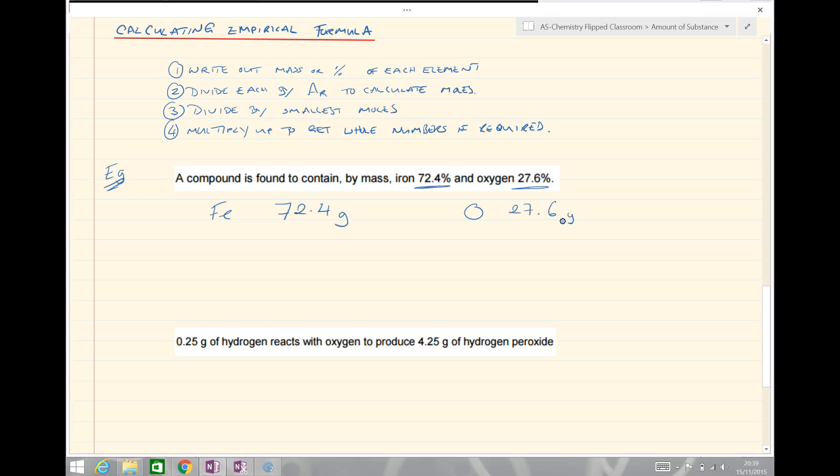Step two: divide each by the AR to calculate the moles. The AR of iron is 56 and of oxygen 16. So here we'll have, to work out the moles, 72.4 over 56 and here we've got 27.6 over 16. We'll pop that into our calculator. For iron we get 1.29 moles and for oxygen we get 1.73.